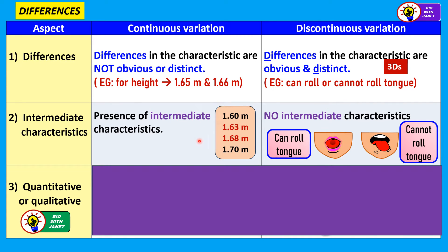Next, intermediate characteristics. In continuous variation, there is the presence of intermediate characteristics. For example, between the heights of 1.60 to 1.70 metres, there are many intermediates like 1.63 metres, 1.68 metres and so forth. But for discontinuous variation, there are no intermediate characteristics. There are those who can roll their tongue and those who cannot — two groups only, and no in-between characteristics like half-rolling the tongue.